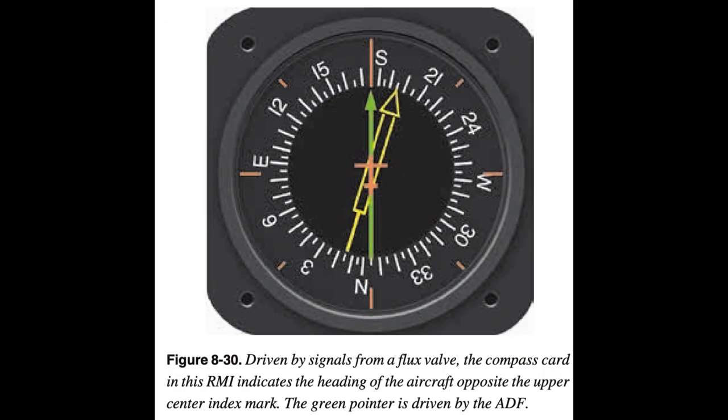As instrument panels become more crowded and the pilot's available scan time is reduced by a heavier flight deck workload, instrument manufacturers have worked toward combining instruments. One good example of this is the RMI, in which the compass card is driven by signals from the flux valve, and the two pointers are driven by an automatic direction finder (ADF) and a very high-frequency omni-directional radio range (VOR). Heading indicators that do not have this automatic north-seeking capability are called free gyros and require periodic adjustment.